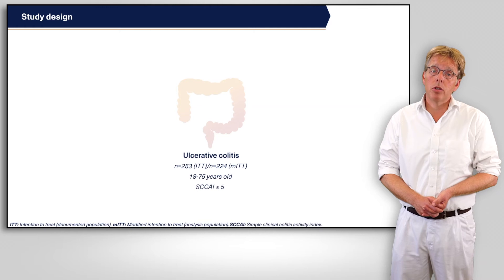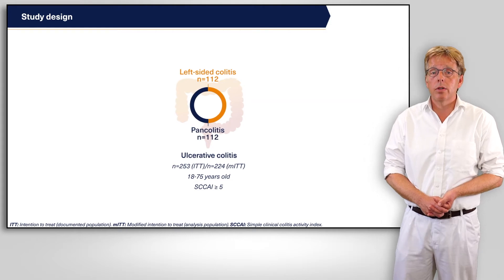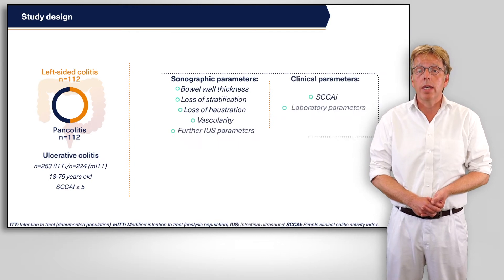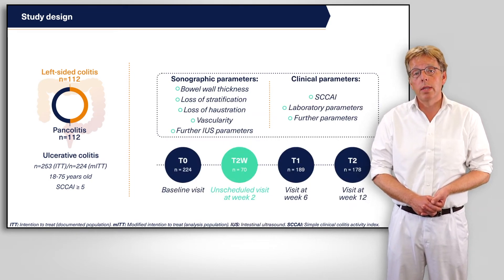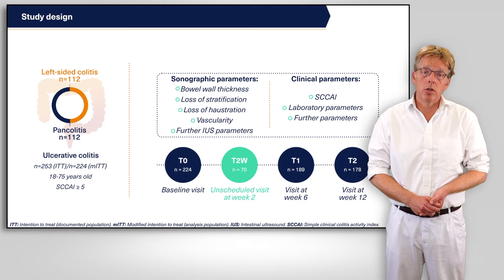253 patients receiving different levels of care, 112 of them with active left-sided colitis and another 112 with pan-colitis in clinical relapse defined as SCCAI equal to 5 or more, were enrolled and monitored with IUS performed at baseline, unscheduled in a subgroup at week 2, and then again scheduled at week 6 and 12.